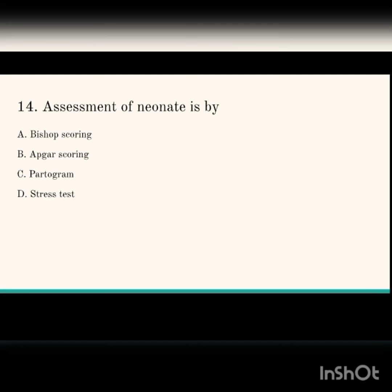Assessment of a neonate is by Apgar scoring. Bishop score is used for dilation of the cervix and induction of labor, covering areas like effacement, consistency, dilation, and position. A high Bishop score indicates a favorable chance for induction. The partogram is a graphical representation of the stage of labor.